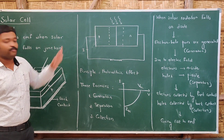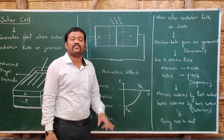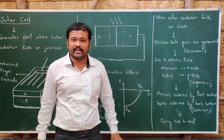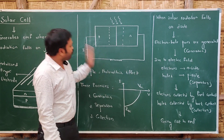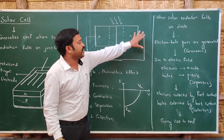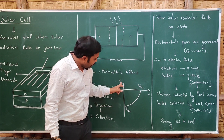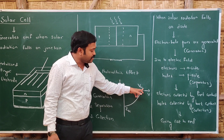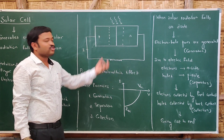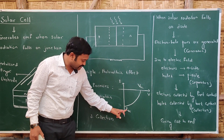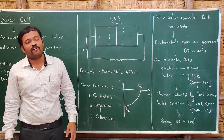Looking at the IV characteristics of the solar cell, the graph is in the fourth quadrant because the solar cell is not drawing current — it is supplying current. VOC is the open circuit voltage: when not connected to a load, there is no current but there is maximum voltage. ISC is the short circuit current: when the terminals are short-circuited, maximum current flows. This is the IV characteristic of a solar cell.